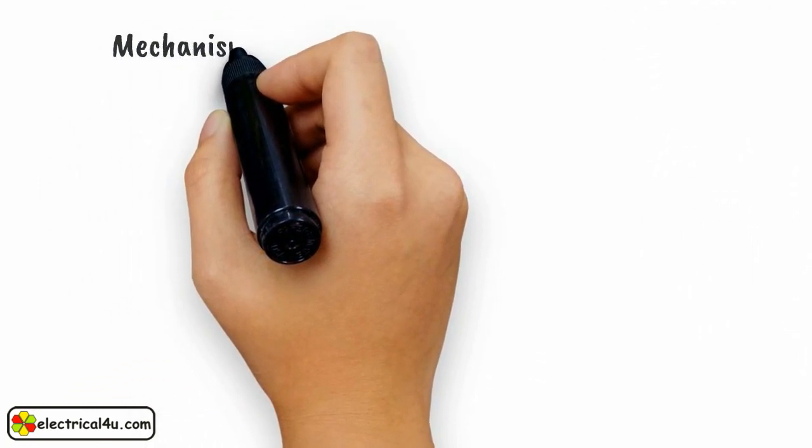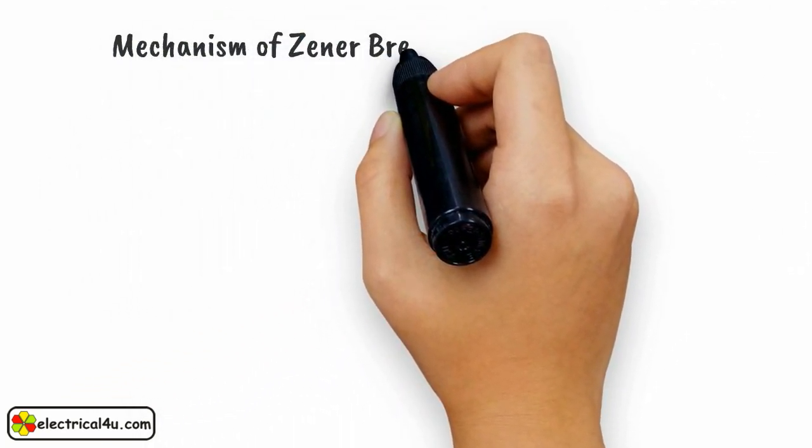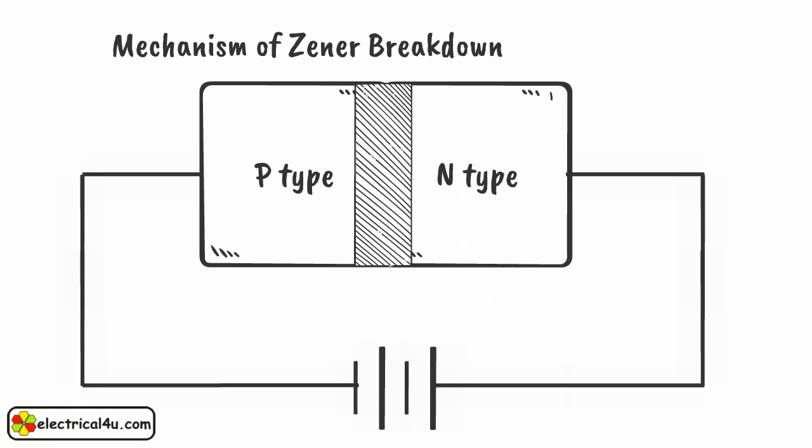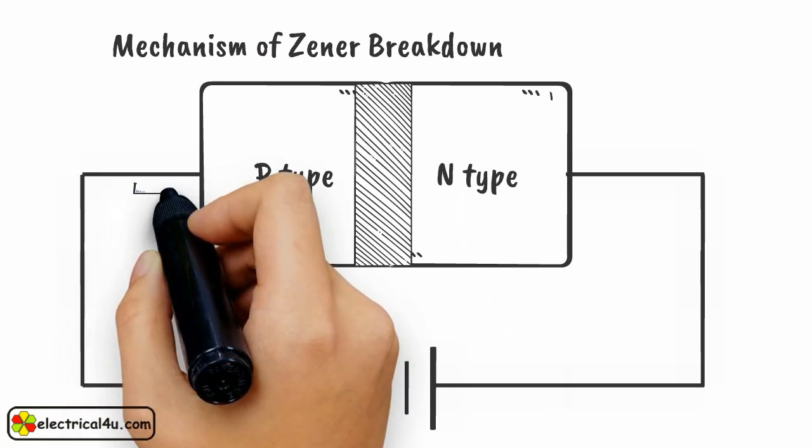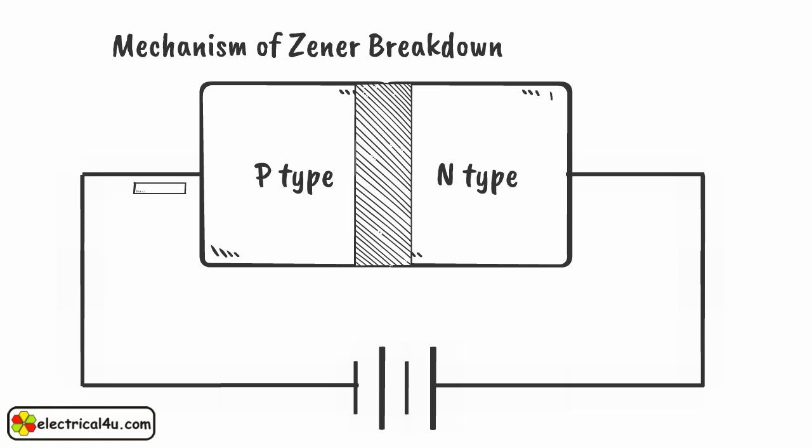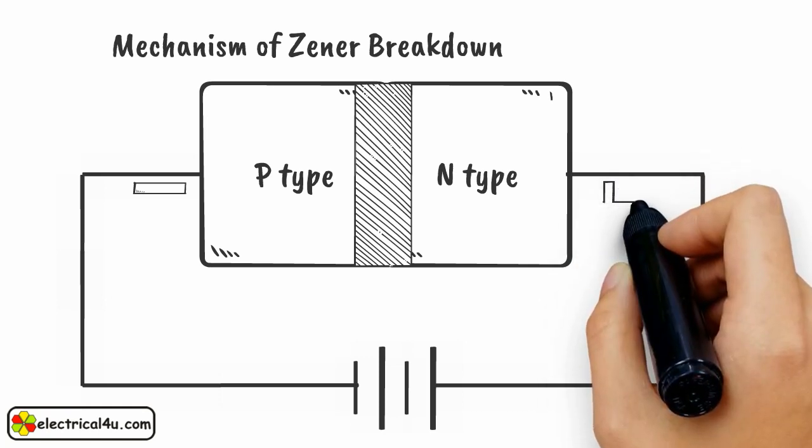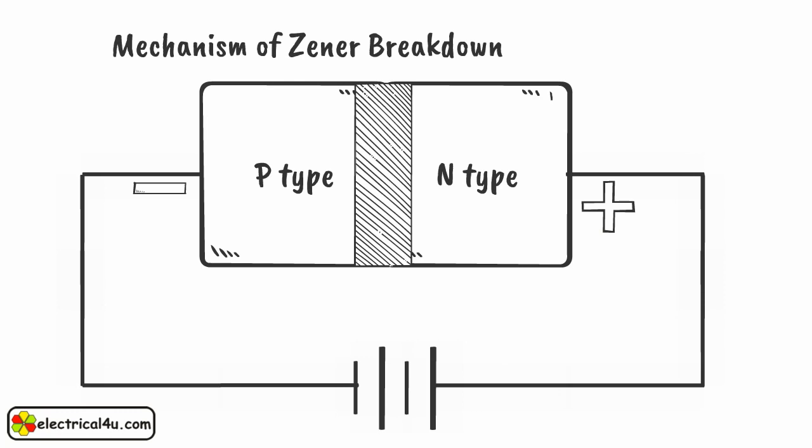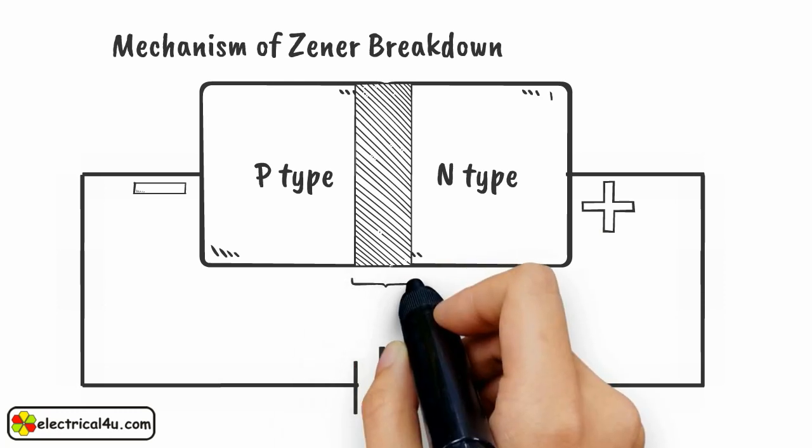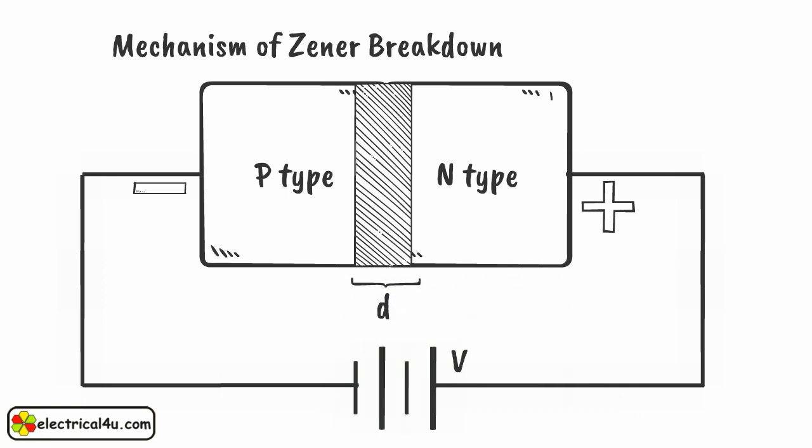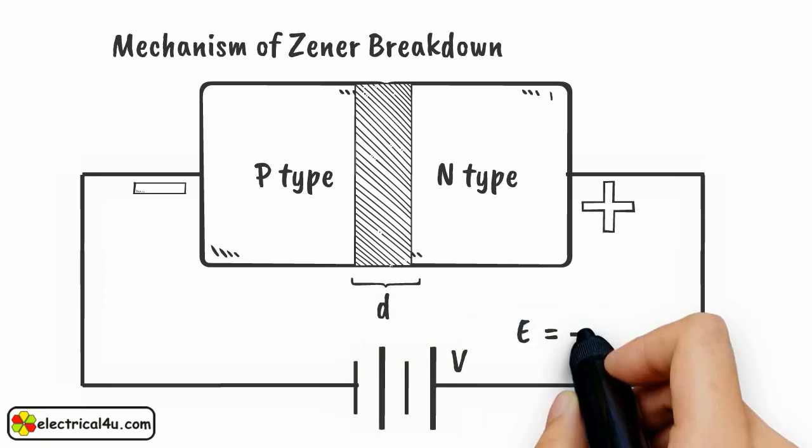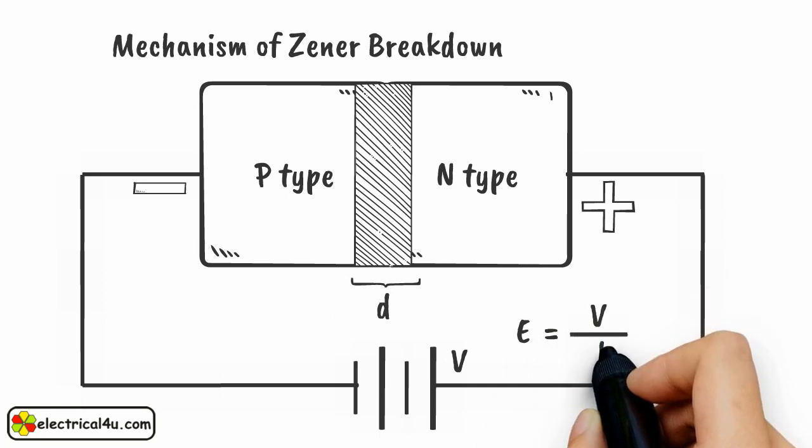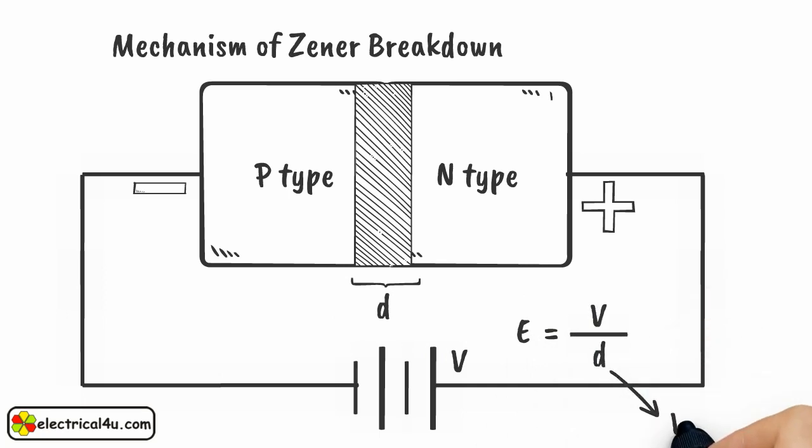Now let us come to the actual mechanism of Zener breakdown. It is made reversed biased. That means P side is connected to the low potential terminal of the battery and the high potential terminal of battery is connected to the N side. The supplied voltage is V and the width of the depletion layer is D. Here the value of electric field E is very high since we can write E equals V by D and D is very small.